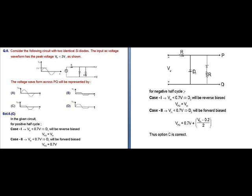In the positive half of the AC input, we divide it into two cases. In the first case, when V is less than 0.7 volts, diode D1 will be reverse biased and the output voltage across PQ will be equal to V_in only. In the second case, when V is greater than 0.7 volts, D1 will be forward biased and the output voltage will be equal to 0.7 volts.